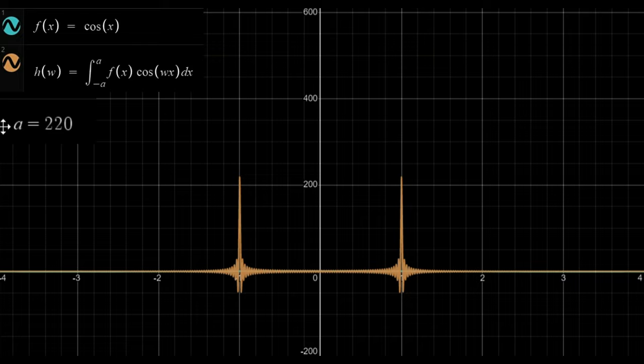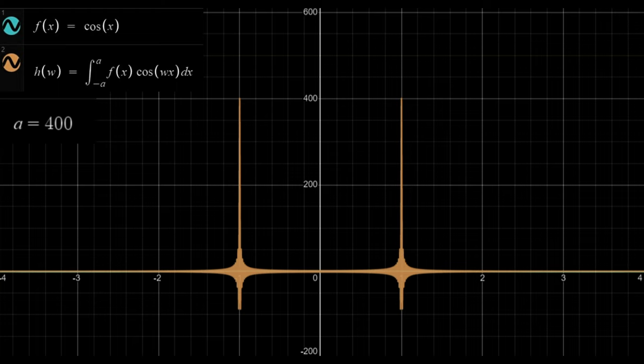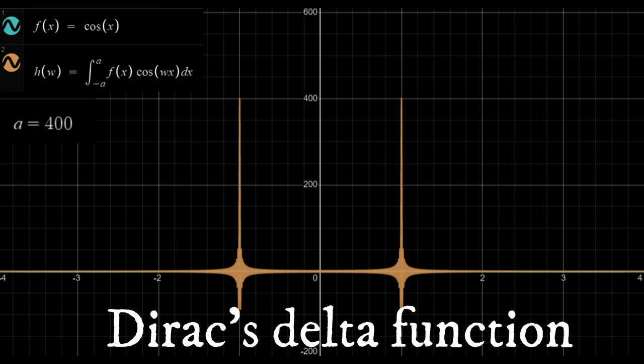But if the area approaches 1 while the width approaches zero, this must mean that the height is approaching infinity. This type of spike has a special name: Dirac's delta function. It has many uses in physics and engineering, and it's going to help us a lot later.